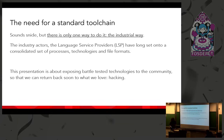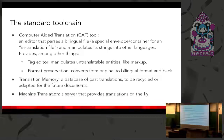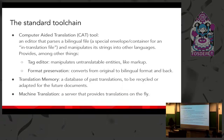This presentation is about exposing battle-tested technologies to the community so we can return to what we love — hacking — and not come up with new ways of translating software. The standard toolchain for a translation company or open source project starts with a CAT — a computer-aided translation tool — which is an editor that parses a bilingual file.